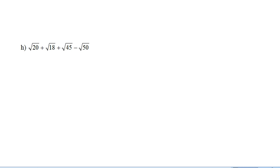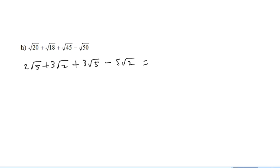H is our last example for this section. Root 20 is the same as 2 root 5. Root 18 is the same as 3 root 2. Root 45 is the same as 3 root 5. And root 50 is the same as 5 root 2. If you don't remember how to get from 20 to 2 root 5, you're going to have to go back a few lessons. So in this case we've got 2 root 5 and 3 root 5 is 5 root 5. And 3 root 2 minus 5 root 2 is going to be minus 2 root 2. All done.